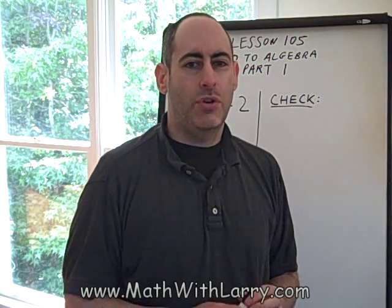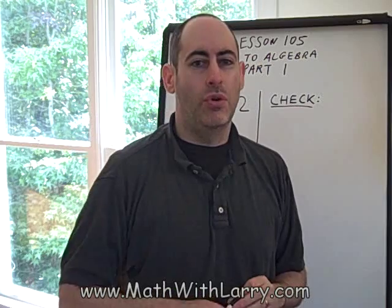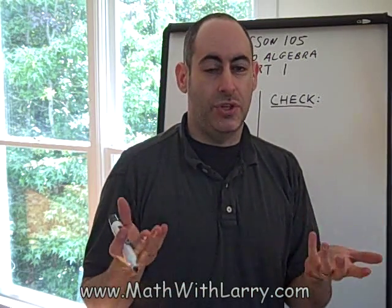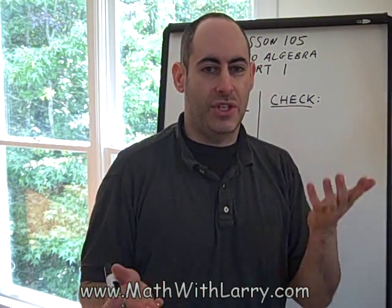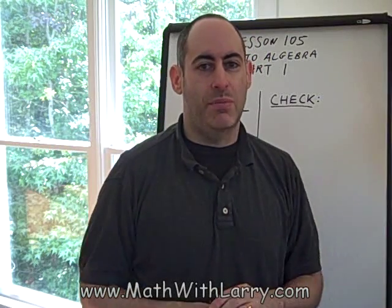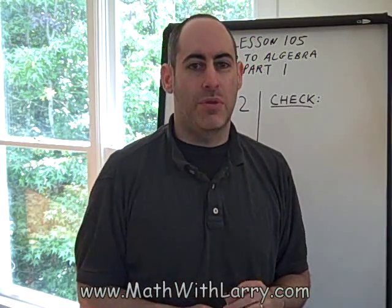You can think of an equation as an old-fashioned balance scale. The two sides are always in balance. If we're going to do something to one of the sides, we have to do the exact same thing to the other to keep it in balance — and we're going to be doing the same thing in algebra.